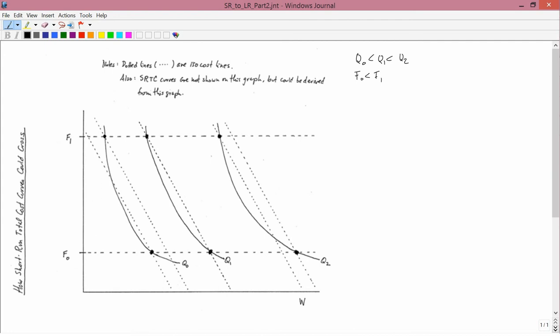So let's look at the Q0 case first. For the Q0 case, you have two possibilities. If you produce Q0 using F0 pounds of fertilizer, you're here. And if you produce Q0 using F1 pounds of fertilizer, you're here.